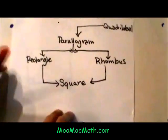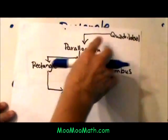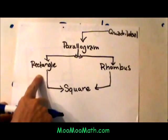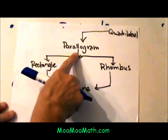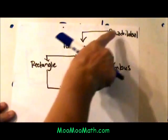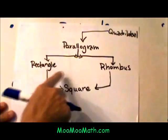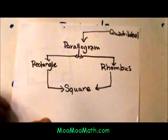Before we do that, let me show the diagram that I have. A rectangle falls in the family under a parallelogram. If it's a parallelogram, it's also a quadrilateral. It's a branch off of a parallelogram.